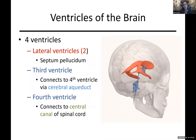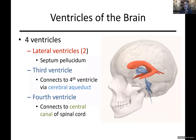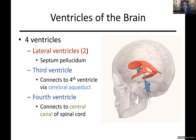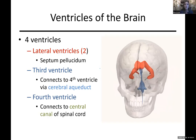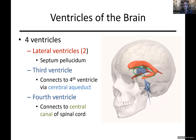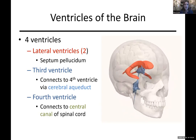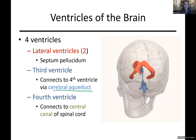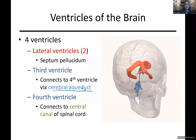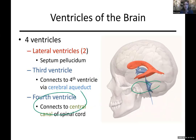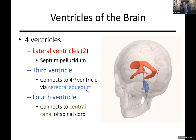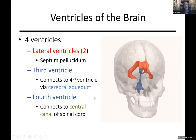The ventricles are spaces within the brain. We have two lateral ventricles, one on either side - right and left - divided by the septum pellucidum. The third ventricle comes down in the middle area, and it connects down to the fourth ventricle via the cerebral aqueduct. The fourth ventricle is the lower enlarged portion. These are all distinct spaces within the brain, and within each of those spaces we actually make cerebral spinal fluid.